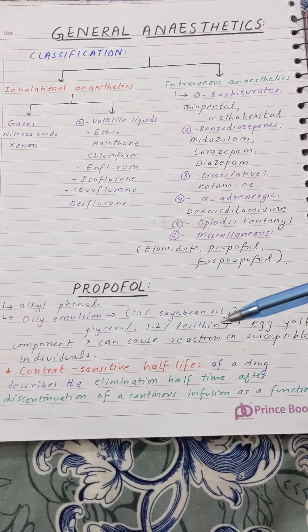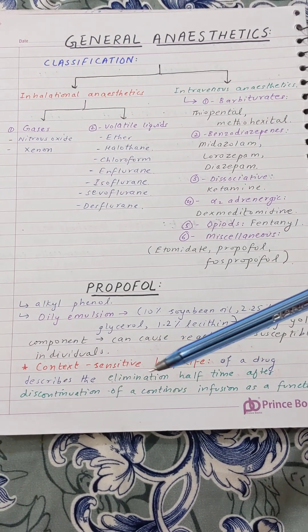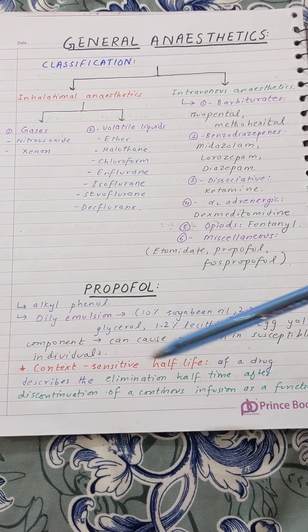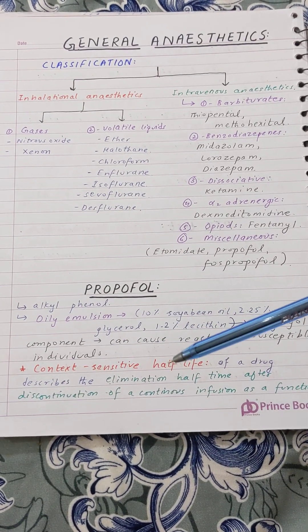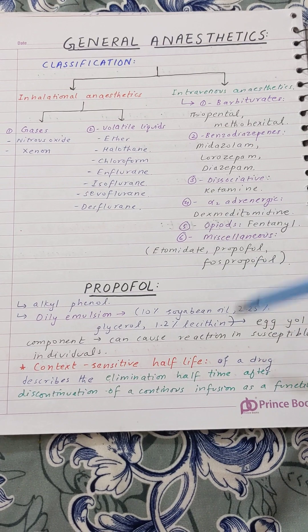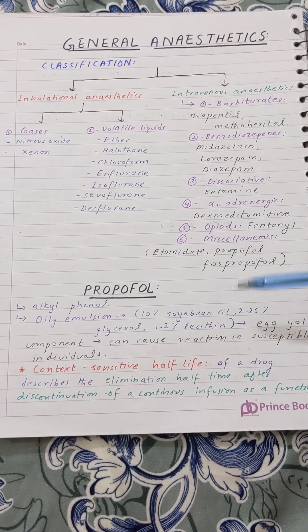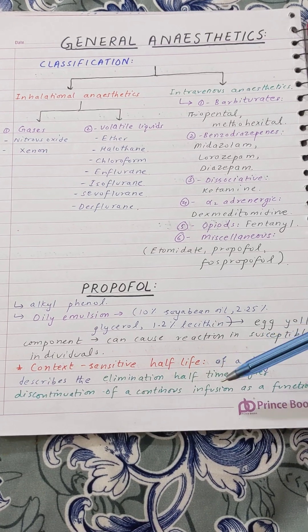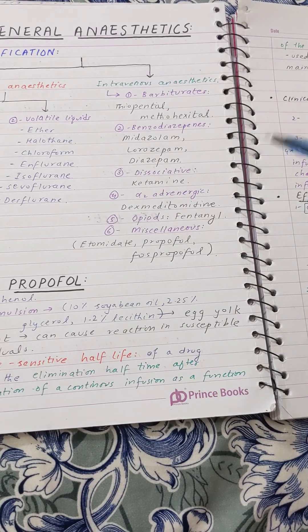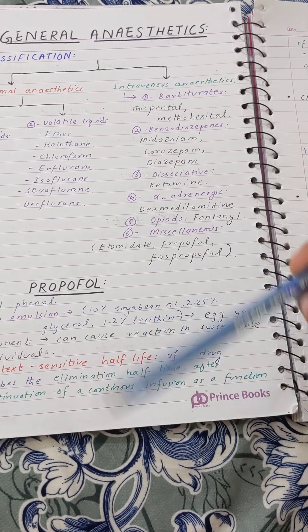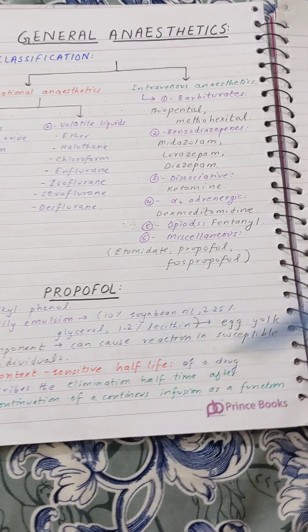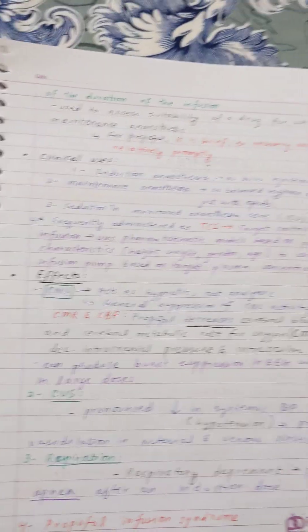When we give a drug as a continuous infusion and then stop it, the elimination half-life at that point depends on how long the infusion was running — that duration is the 'context.' Context-sensitive half-life is simply the elimination half-life after discontinuation of a continuous infusion as a function of the duration of that infusion.